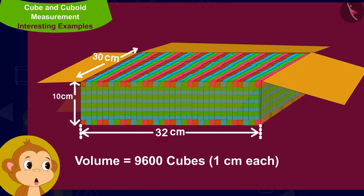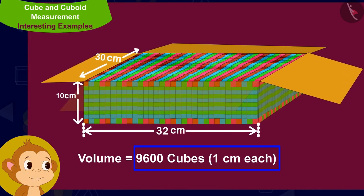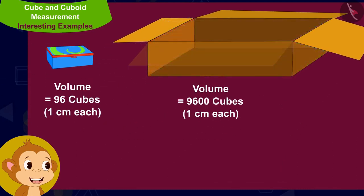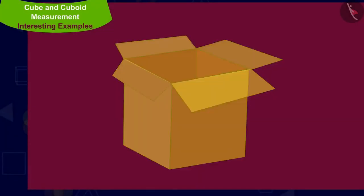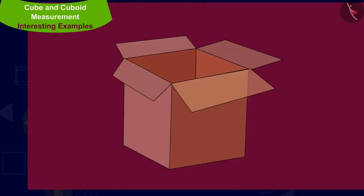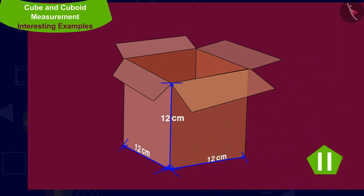The volume of a compass box is 96 cm³ and the volume of this cuboid box is 9600 cm³. Therefore, 9600 divided by 96, that is 100 compass boxes will fit in this box. Children, if the edges of Babban's cube shaped box are 12 cm each, can you tell how many compass boxes will fit in it?